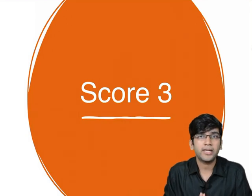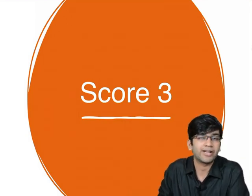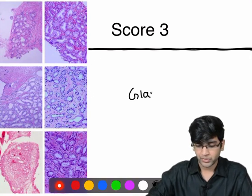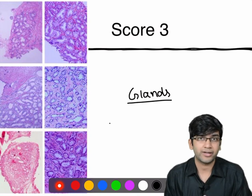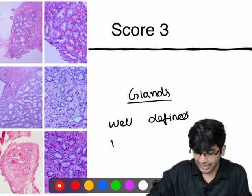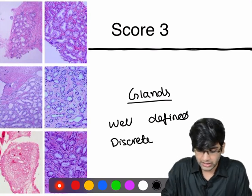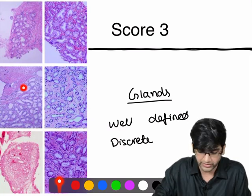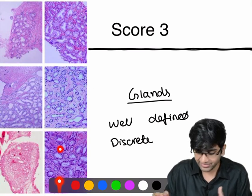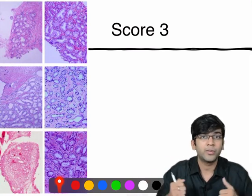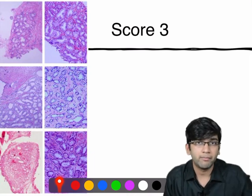The first one is score three. When I look at a biopsy of prostate, when do I give a score three? When a pathologist sees a well-defined gland formation — the gland should be perfect, with a perfect lumen, and they should be discrete. Discrete means they should not be fused; there should be space between them. Even if they are crowded, I still need to see space between them. When I see a space between glands and a well-formed lumen, I give a score of three.